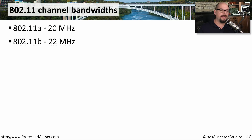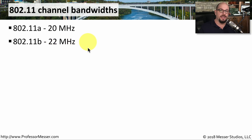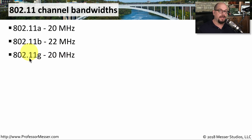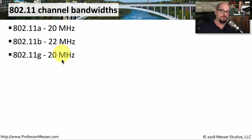802.11a and 802.11b were introduced at effectively the same time and used very similar bandwidths. 802.11a uses 20 megahertz and 802.11b uses 22 megahertz. The modulation used for these two standards was slightly different, but the overall bandwidth was very similar. The introduction of 802.11g also used the same frequencies as 802.11b, but a change in modulation also changed the bandwidth used in the 2.4 gigahertz range.